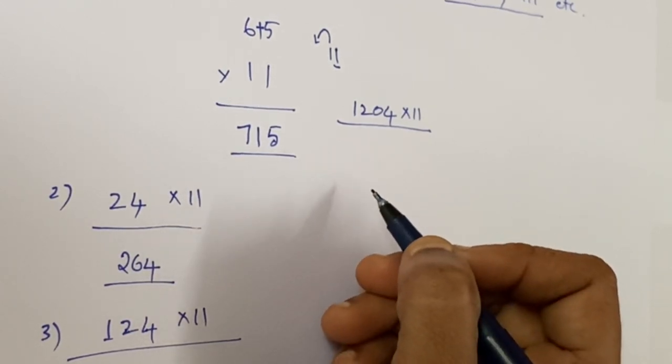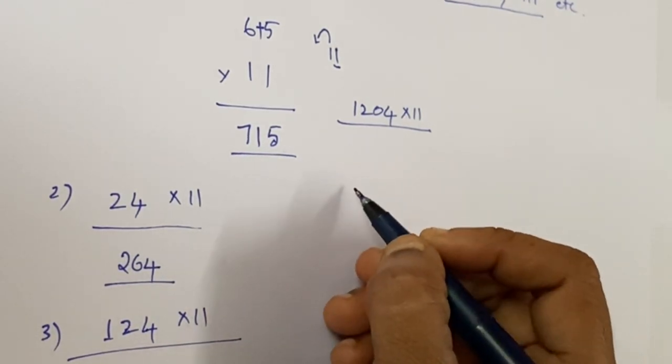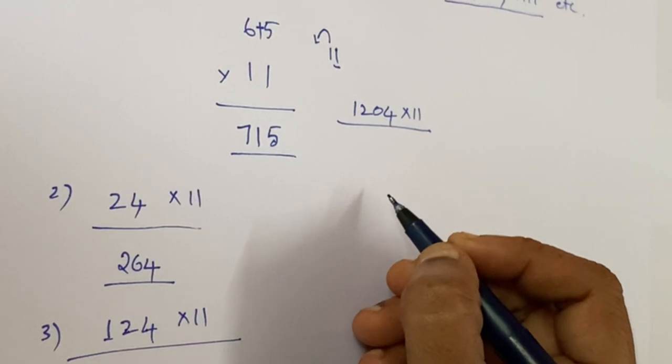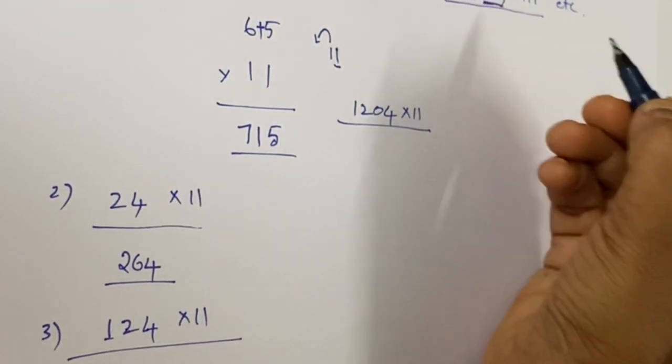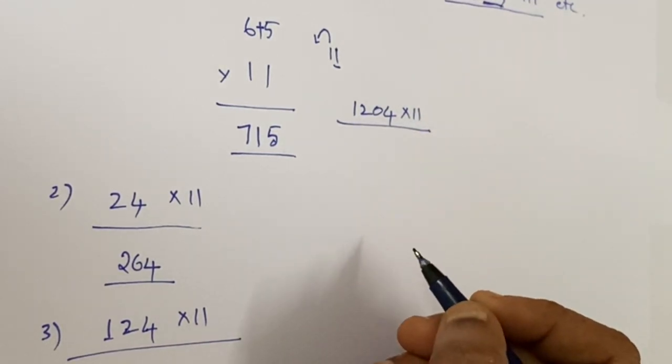This is the greatness of Vedic mathematics. In our next video we will learn about how to multiply a number with three-digit ones, that is the one series, triple one. Until then, happy studying!